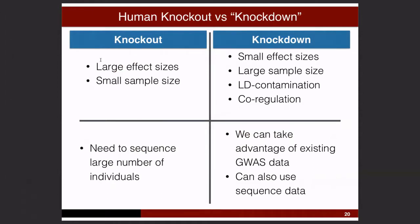Comparing the two approaches: knockouts give large effect sizes because there are zero functional copies, but you only have a handful of individuals per gene — small sample size. For the knockdown approach, effect sizes will be small, but we compensate with much larger sample sizes. For knockouts, we need to sequence large numbers of individuals; for knockdowns, we can take advantage of what's already out there — millions of people genotyped for GWAS, biobank data of half a million to a million individuals.